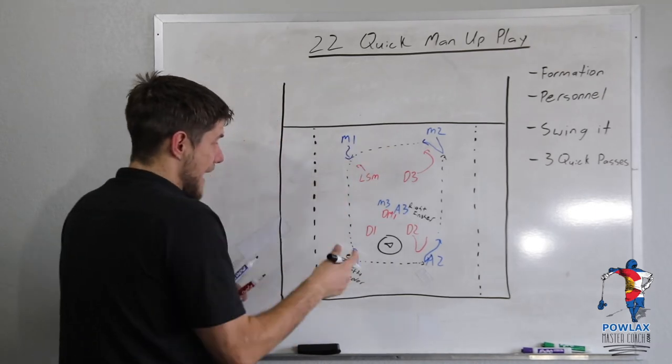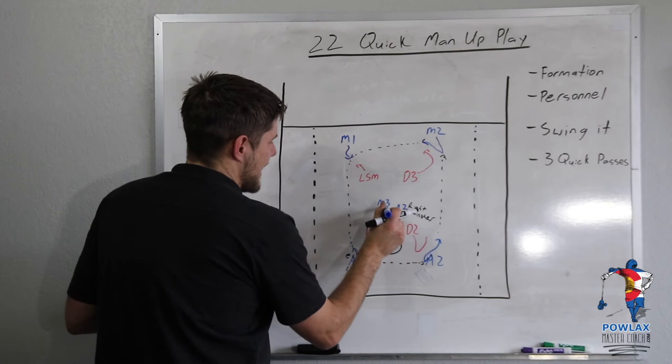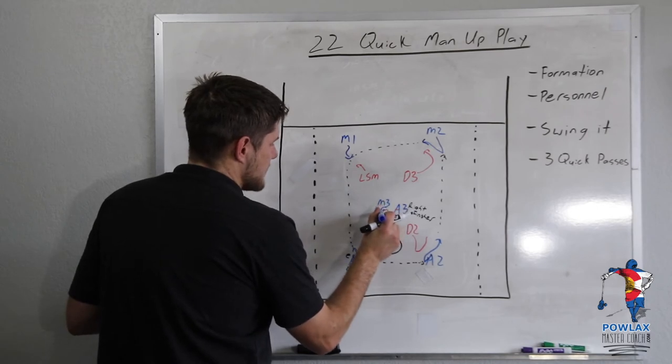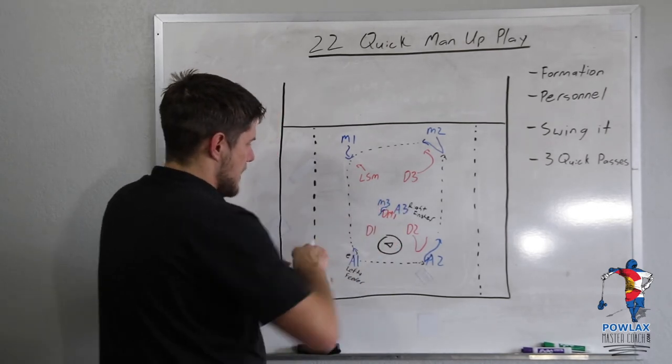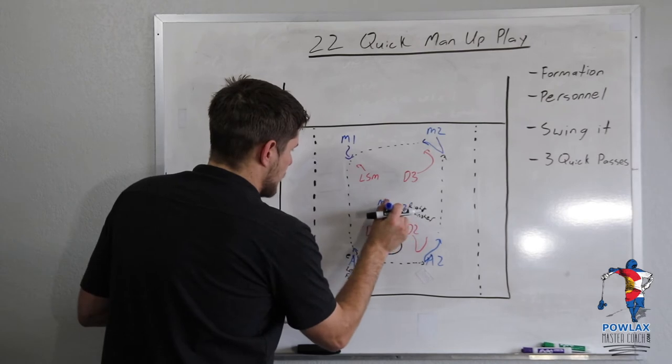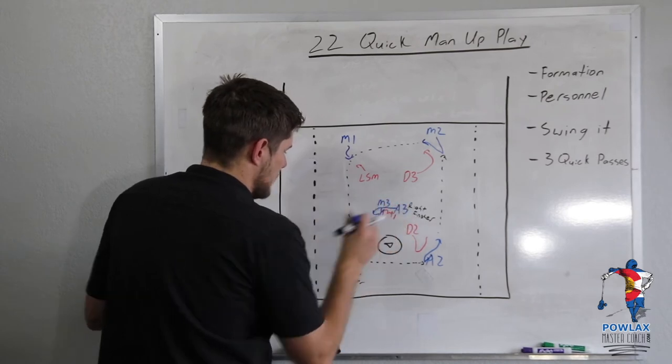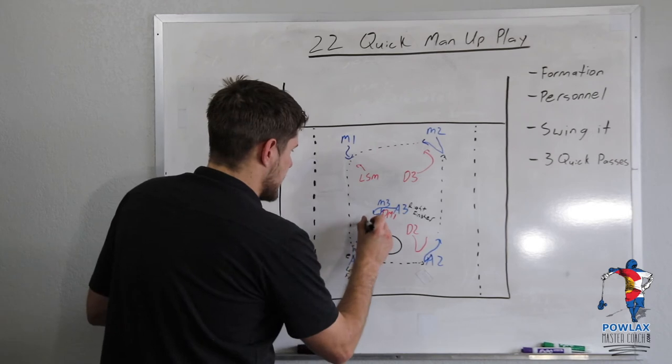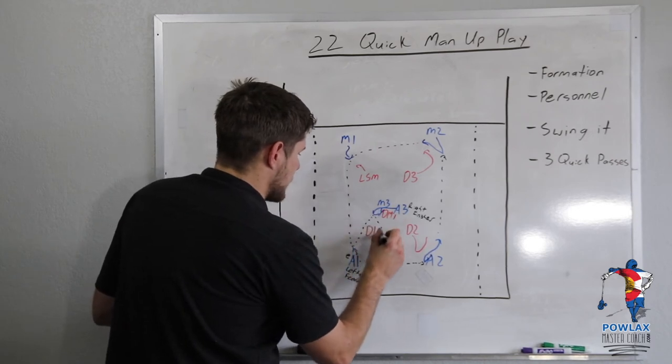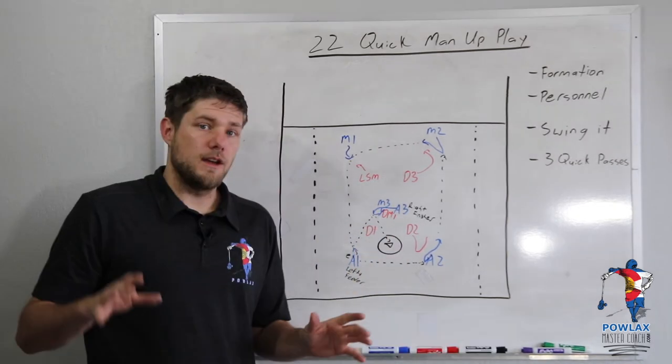And as these passes are happening, M3 is kind of going to slyly come in, step in and just seal off DM1. A3 is going to cut right off the edge of that seal. And then A1 is going to feed A3 inside and A3 is going to shoot the ball.